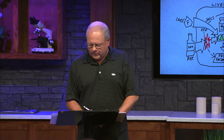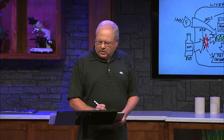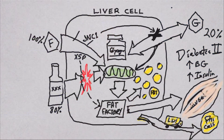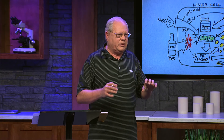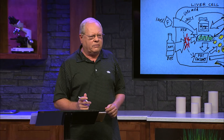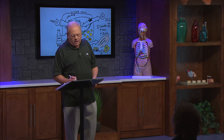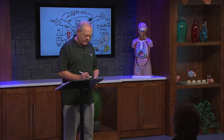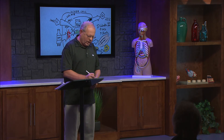Another thing that happens is that some fructose increases the production of uric acid in the liver. Uric acid buildup in joints causes the severely painful gouty arthritis we know as gout — again driven by all this fructose. But there's something else very interesting. To understand it, we look at an artery wall, which has a lining of endothelial cells and outside those, a layer of muscle cells.